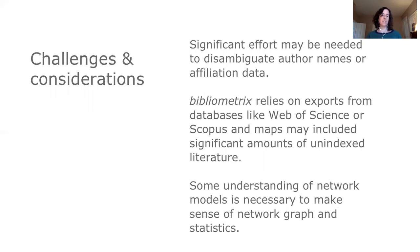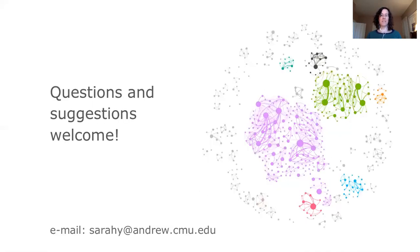Another challenge is getting the citation data for included studies to construct the co-citation and coupling networks. The bibliometrix package is designed to work with outputs from databases like Scopus and Web of Science, but in an evidence and gap map, not all studies may be indexed in these databases. This could involve potentially some manual work to add unindexed studies to your bibliometrics data file. I'm happy to take questions via Slack or email, and I'm definitely looking forward to your thoughts on this project. Thanks.